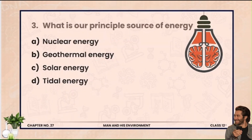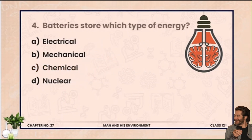Next: what is our principal source of energy? Options are nuclear energy, geothermal energy, solar energy, and tidal energy. Yaad rakhiye ga — solar energy jo hai woh permanent source of energy hai. Next: batteries store which type of energy? Options are electrical, mechanical, chemical, or nuclear energy. Physics ke students achhi tarah jaante hain ke batteries ke andar hamesha chemical energy hoti hai.